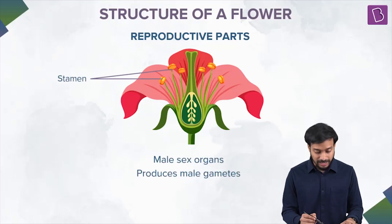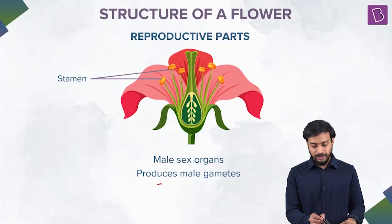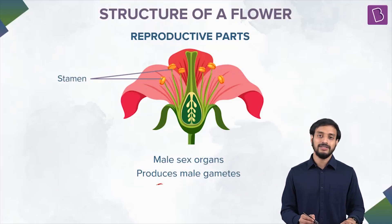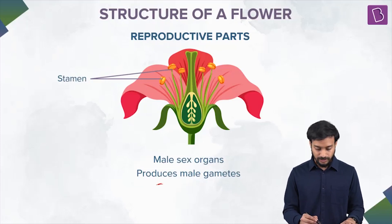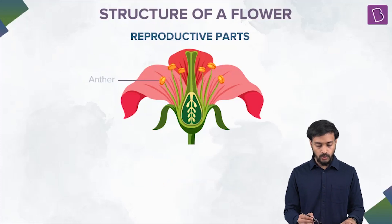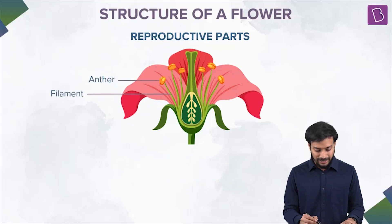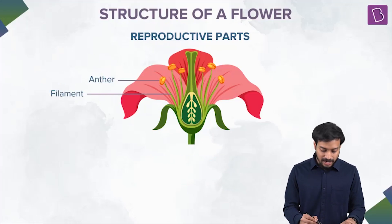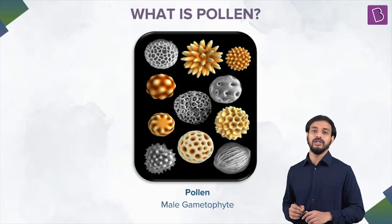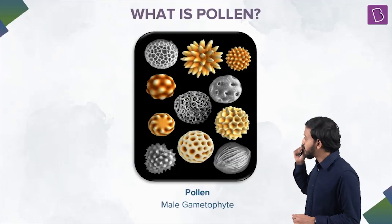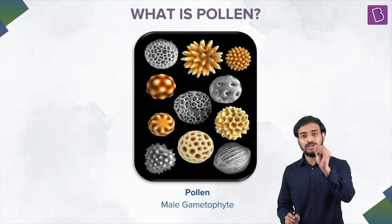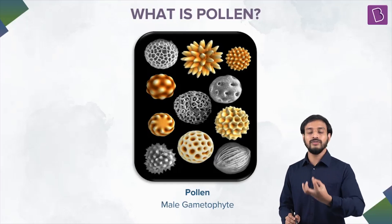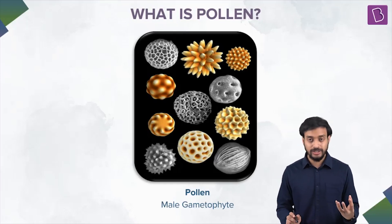Now these are the stamens — the male sex organs. These produce the male gametes, the pollen grains. The stamen consists of the anther and the filament. The morphology of the pollens is really interesting because there are many forms.